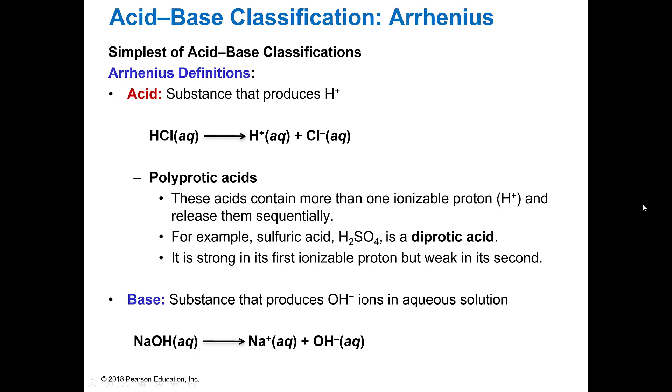So the simplest definition of an acid is an Arrhenius definition, and it's a substance that produces hydrogens. Pretty easy. So if you see one and when you do the ionization of it it produces a hydrogen, you can rest assured that that is an acid. There are also things called this is a monoprotic acid here.